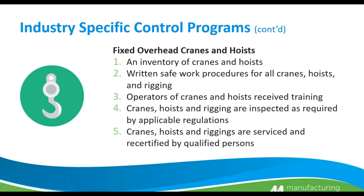Fixed overhead cranes and hoists: maintain an inventory of cranes and hoists, develop a list, and have safe work procedures and standard operating procedures for each one. Operators of cranes and hoists must receive training. Cranes, hoists, and rigging must be inspected as required by applicable regulations — this usually means a third party coming in yearly to inspect jib cranes, overhead cranes, or gantry cranes. Check chains and straps, which will have stamps indicating capacity. Cranes, hoists, and rigging must be serviced and certified by qualified persons.